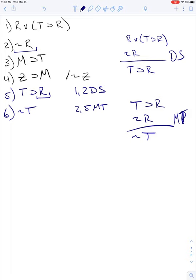Okay, now we have not T, so we get to do it again. You look at line three, you get M to T. Then line six we have not T, and then that will give us not M. So we'll get not M and we're going to be using line three and six to get modus tollens again.